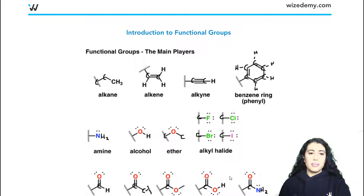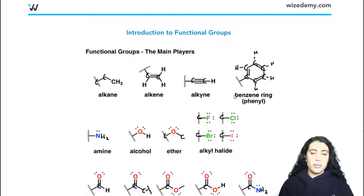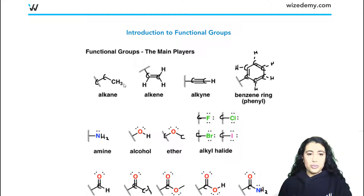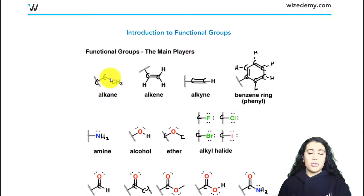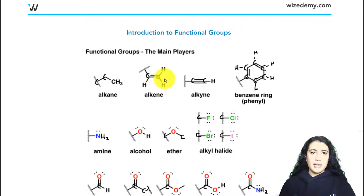Throughout this chapter we're going to have a lesson on each of these different functional groups and learn more about their naming and properties. The first one is an alkane — this is kind of like the simplest one; it's just when you have carbons and hydrogens and it's all single bonds.